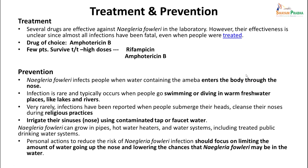Regarding treatment, several drugs are effective against Naegleria fowleri in the laboratory. However, their clinical effectiveness is unclear since almost all infections have been fatal and very few patients have been successfully treated. The drug of choice is amphotericin B, and a few patients have survived with high doses of intravenous amphotericin B. Prevention involves avoiding these amoebae by staying out of warm fresh water lakes and poorly maintained swimming pools, and not irrigating the nose with water that has not been properly treated. The only way to prevent this disease is to limit the entry of these amoebae through the nose.